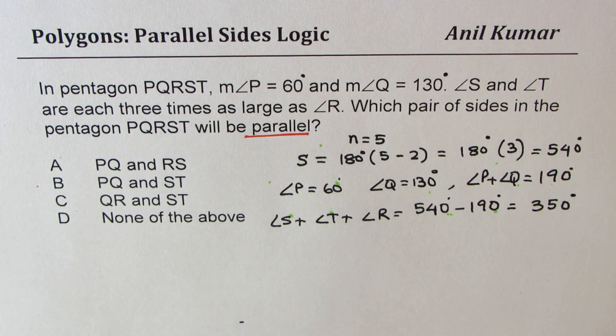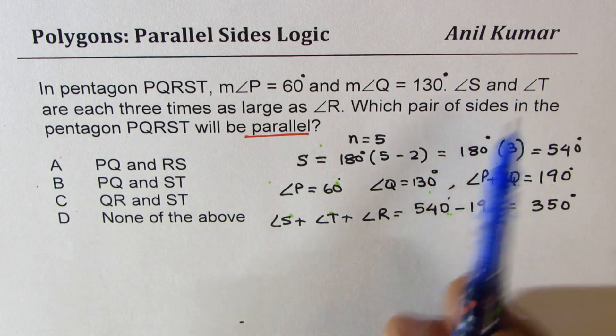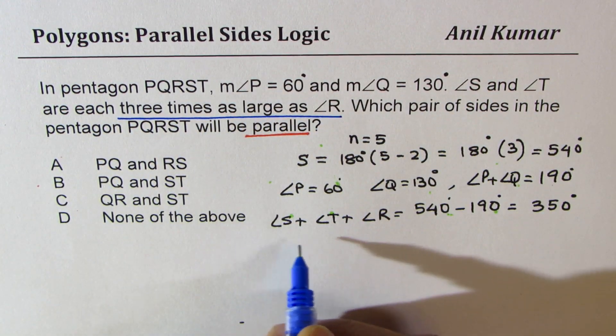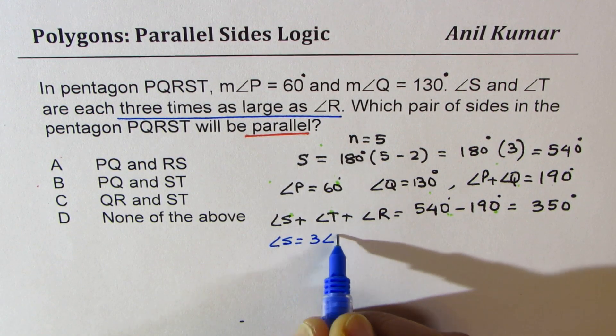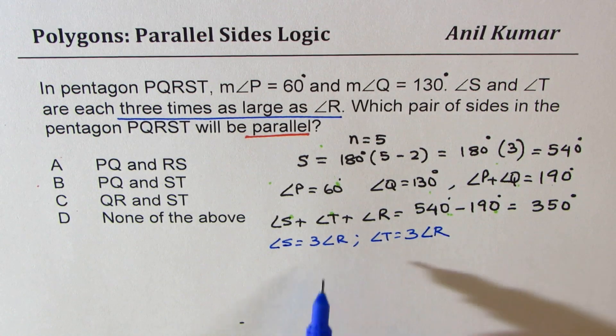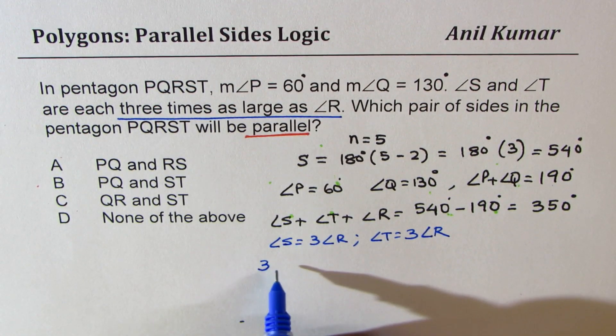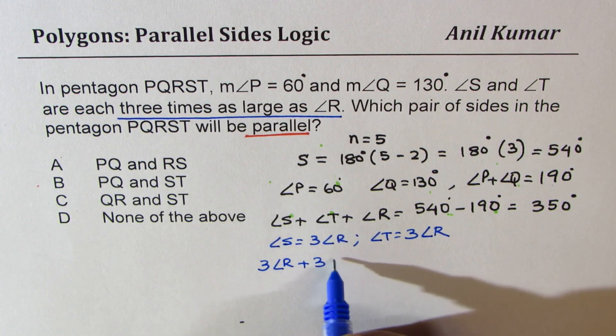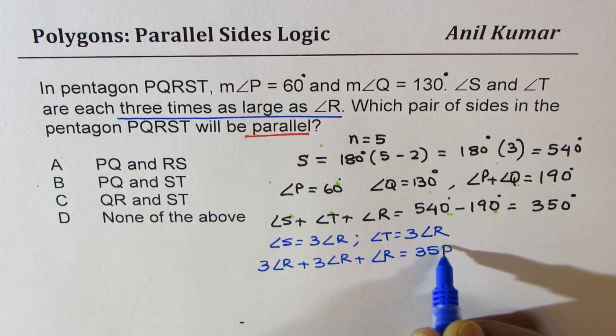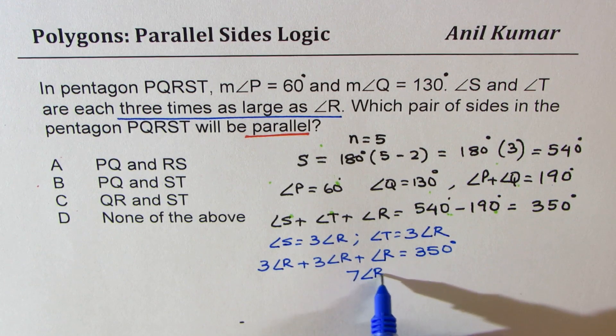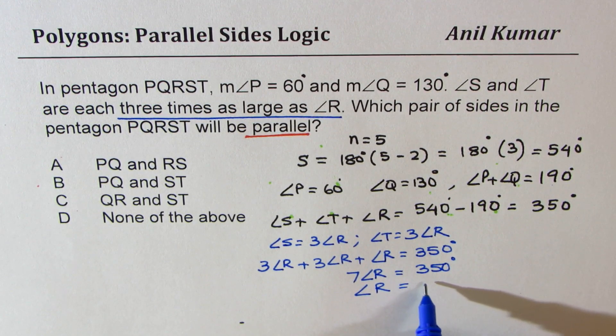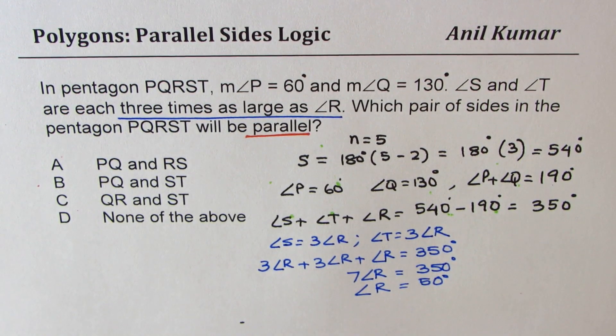We are also given that angle S and T are each three times as large as R. That means angle S equals 3 times angle R and angle T is also 3 times angle R. So if I replace that, I get 3 times angle R plus 3 times angle R plus angle R is equal to 350 degrees. So that clearly is 7 times angle R is 350 degrees. That gives us angle R equals 50 degrees, 350 divided by 7.